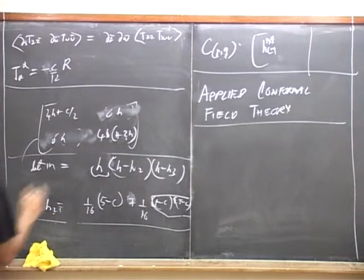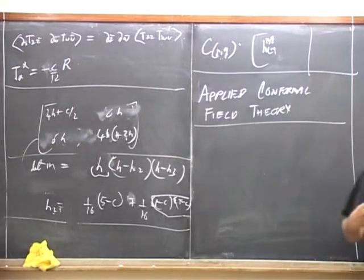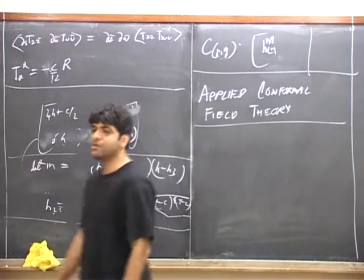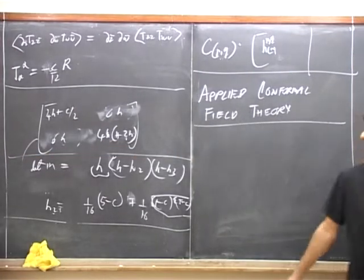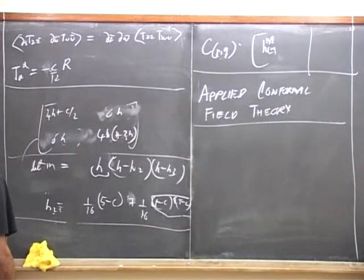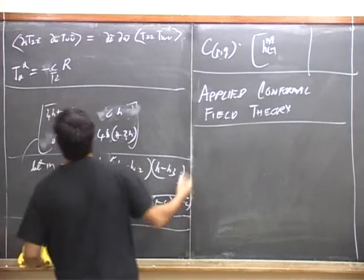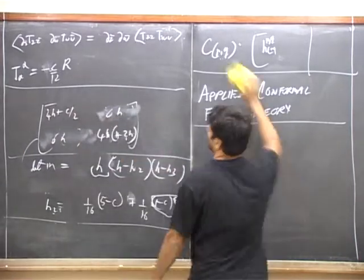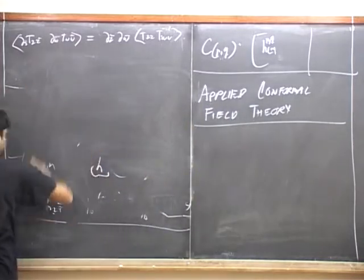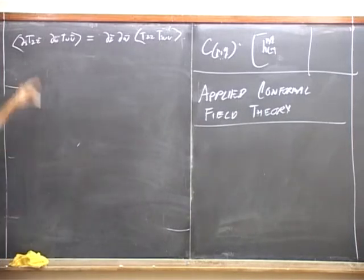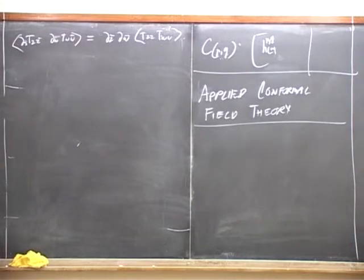The Kac determinant formula is what is used to give the analysis of allowed values of central charge and allowed scaling dimensions of operators. So this was a bit of a digression, but about something quite interesting — about what conformal field theories there are. It will not form the heart of what we talk about for string theory. So now let's get back to the second exercise.